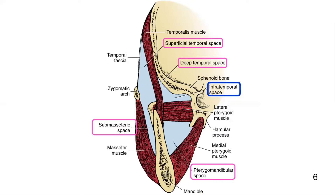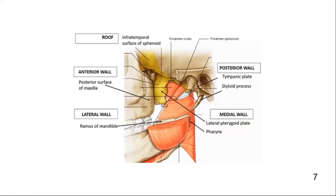Therefore, infections involving one of these spaces usually involve the other space. The infratemporal space is bordered laterally by the ramus of the mandible, anteriorly by the posterior surface of the maxilla, and posteriorly by the tympanic plate and styloid process.